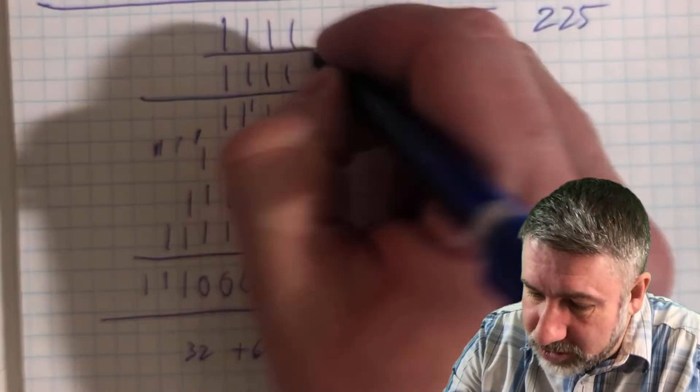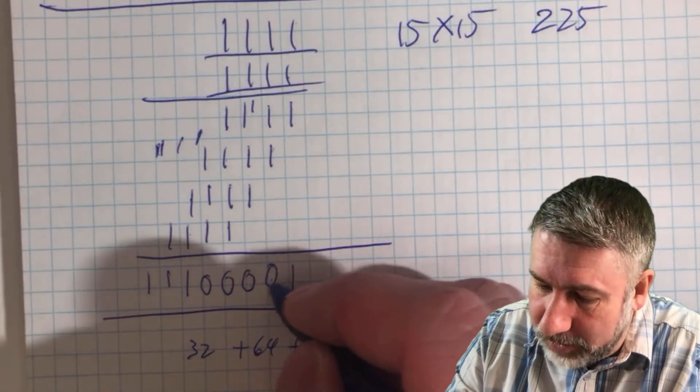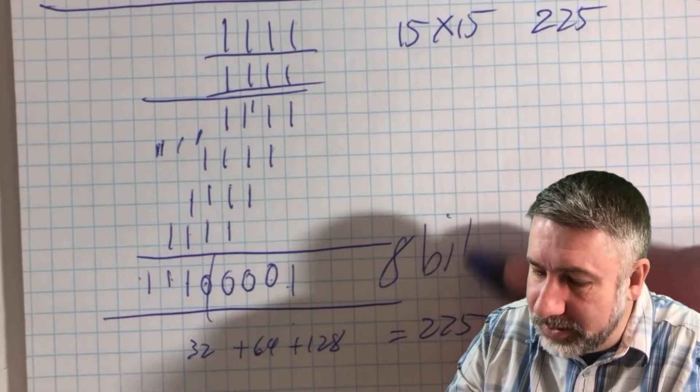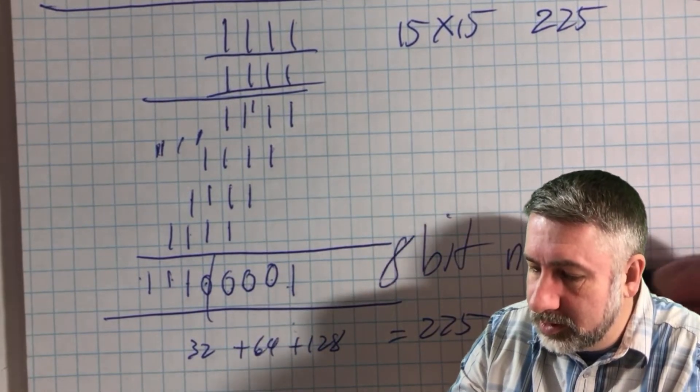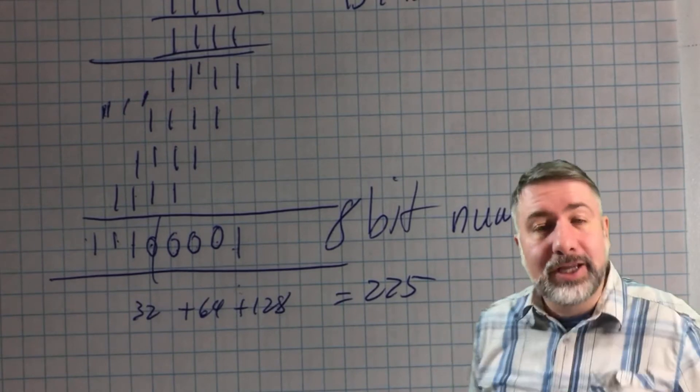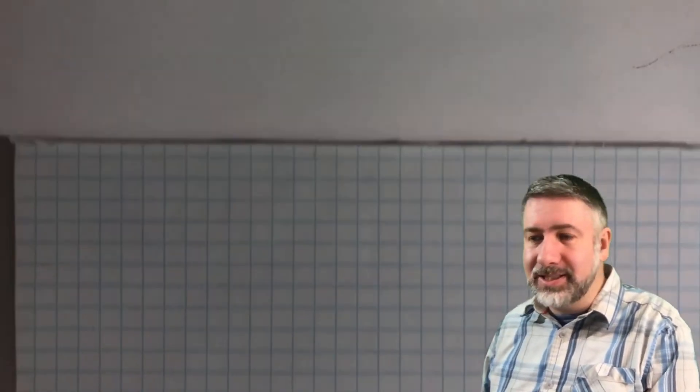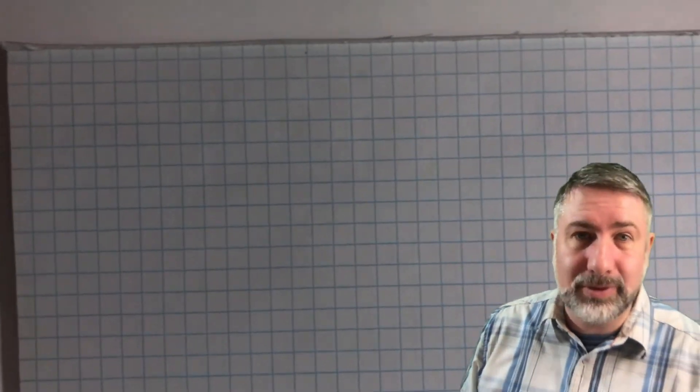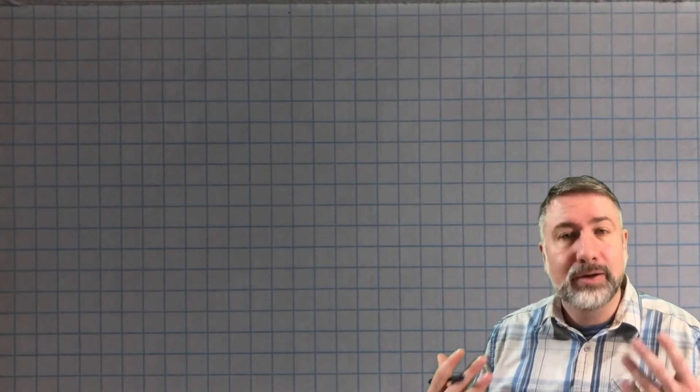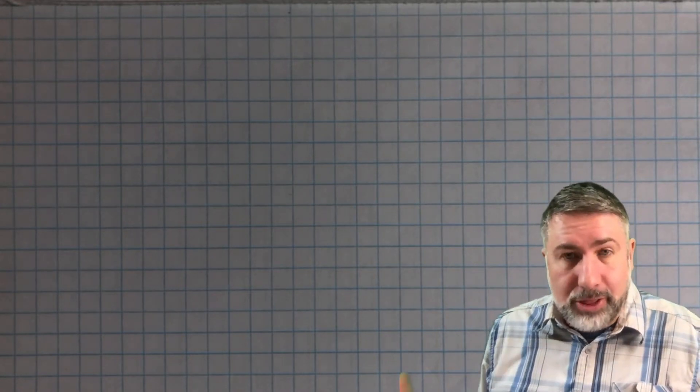But if we notice, we started with two four-bit numbers and we got a one, two, three, four, five, six, seven, eight bit number. So that's a problem, right? Because we have in our MIPS machine 32-bit registers. And that means that if you take two 32-bit numbers and you multiply them together, then there's the potential to get a 64-bit result. We don't have 64-bit registers, we've got 32-bit registers.